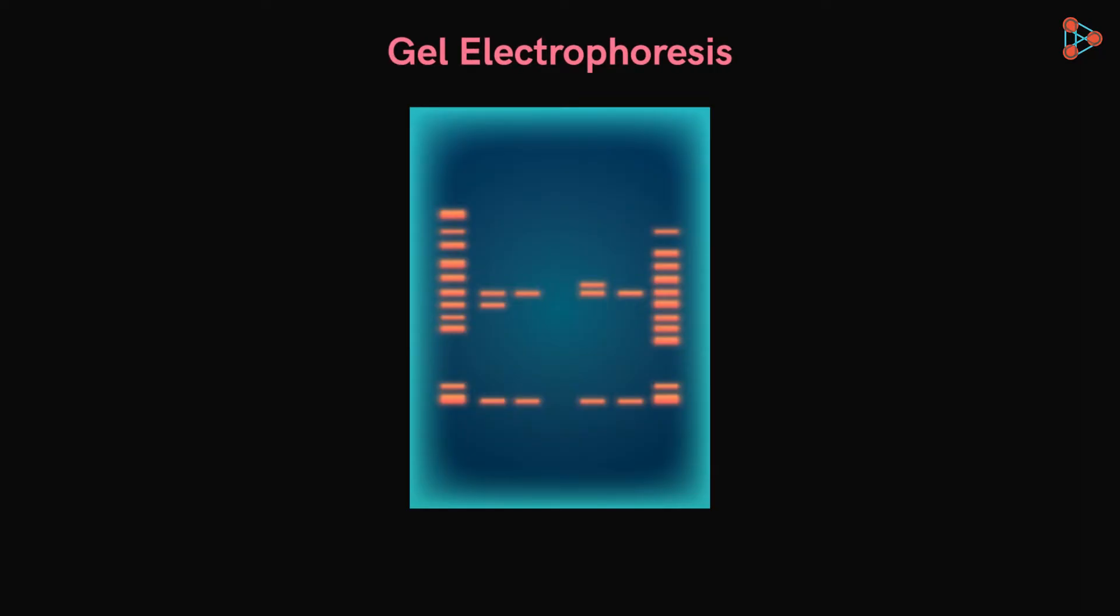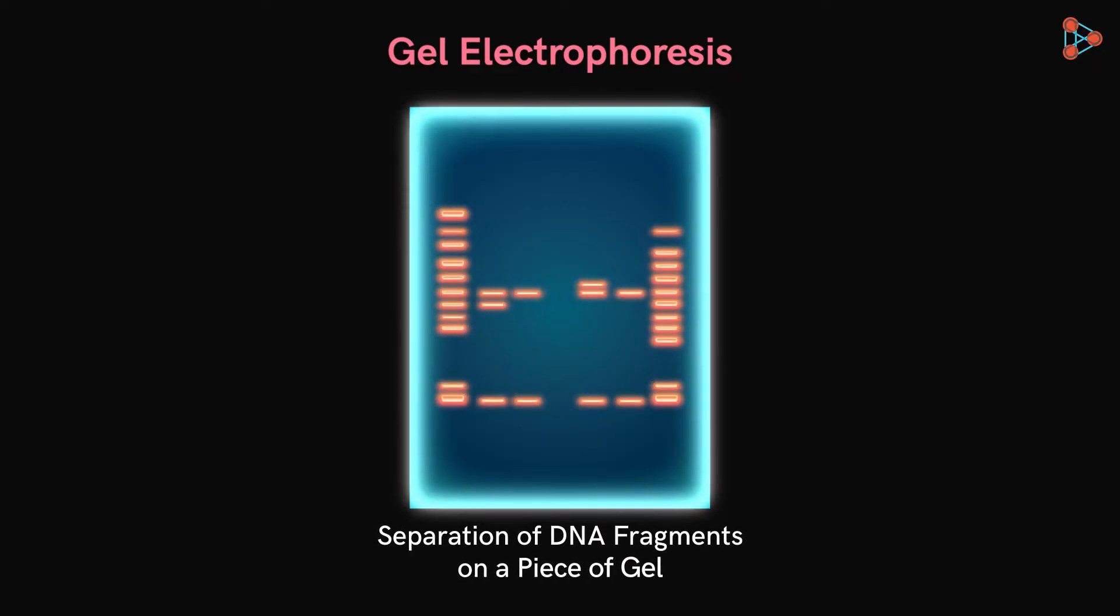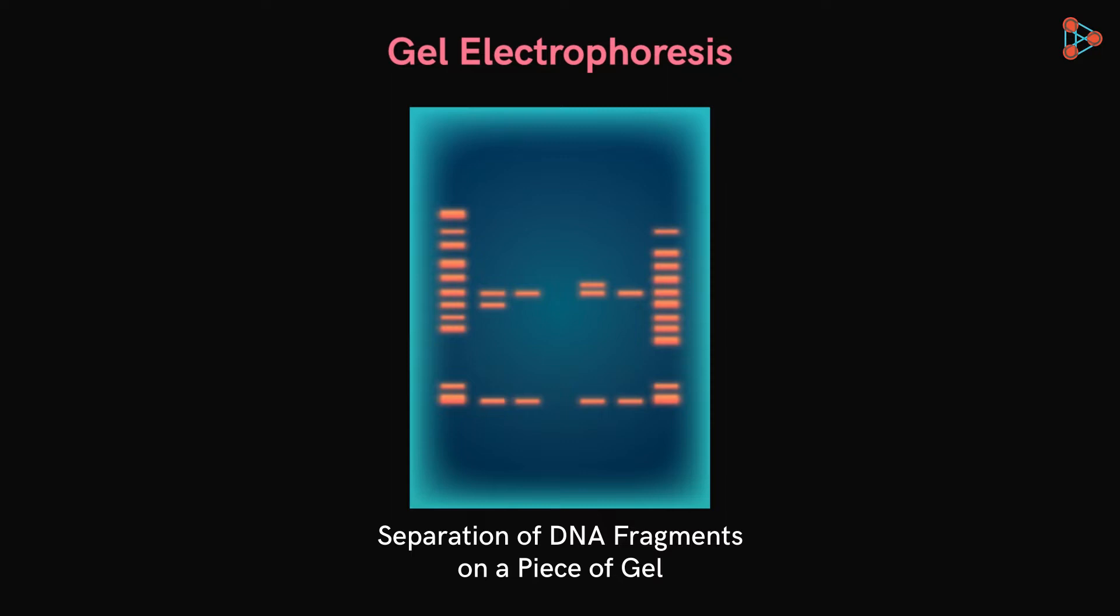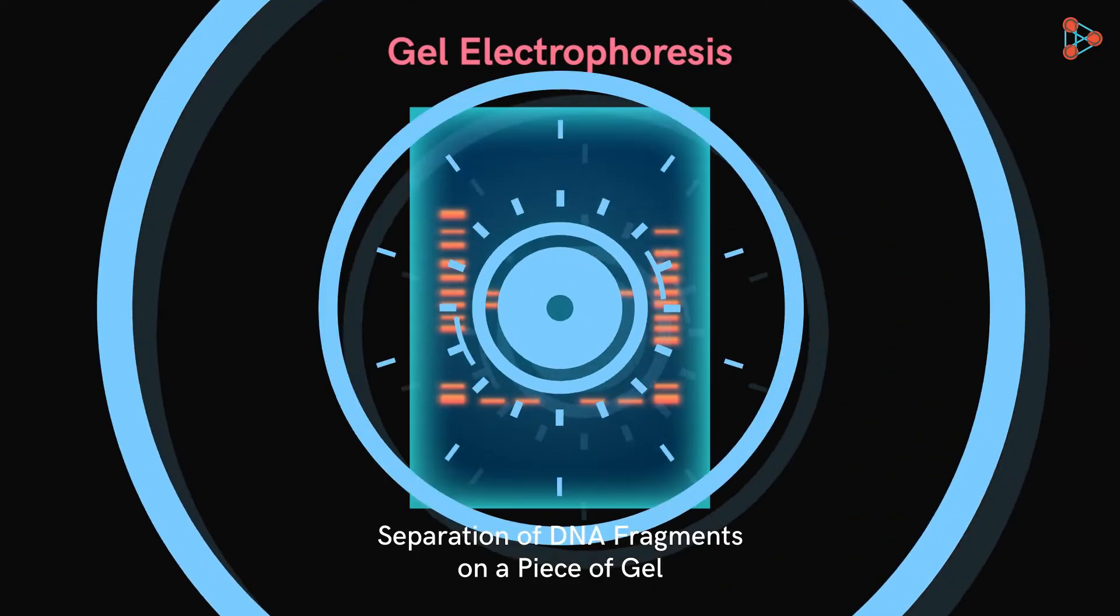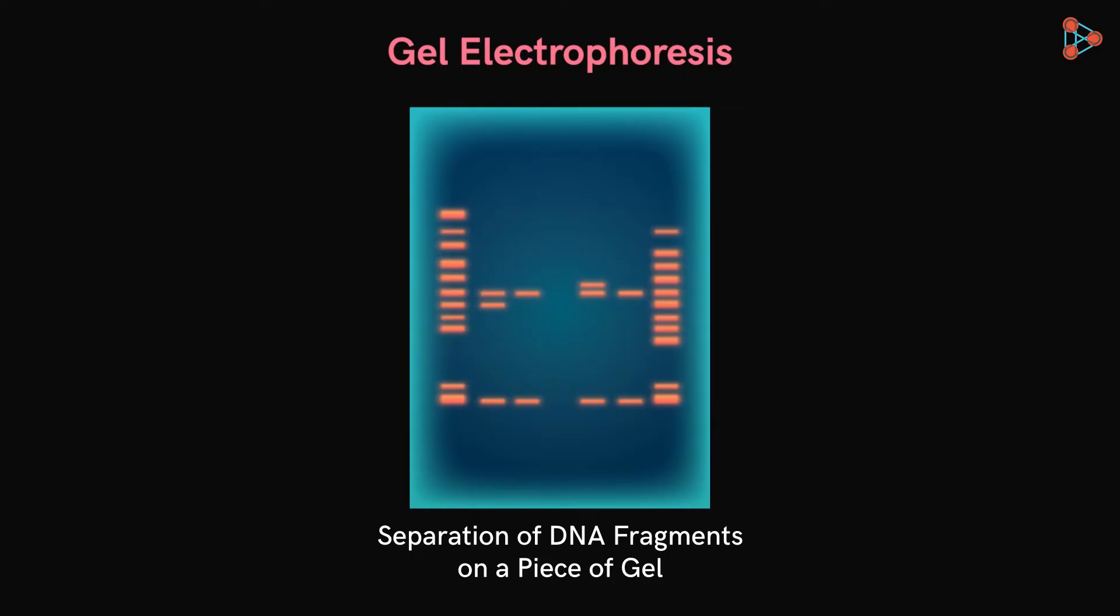And the process of separating them is called gel electrophoresis. Doesn't this sound very difficult? Separating DNA fragments on a piece of gel? But actually, the process of gel electrophoresis is not very difficult. In fact, it's quite easy. Let's have a look at how the process works and also the principle behind it.